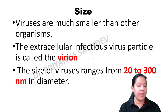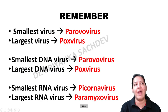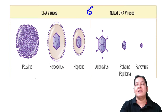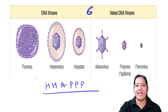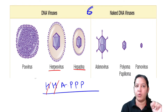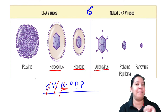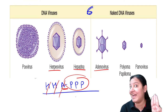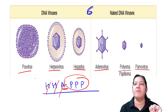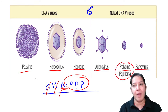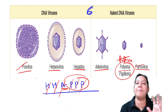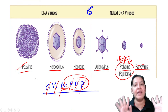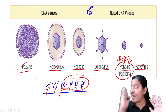Among the DNA viruses there are only six. The mnemonic is: two H, one A, and triple P. The two H are Herpes and Hepadena. The one A is Adeno. The three P are Pox virus, Pepova virus (combining Papilloma and Polyoma), and Parvo virus. So the six DNA viruses are: Herpes, Hepadena, Adeno, Pox, Pepova, and Parvo.